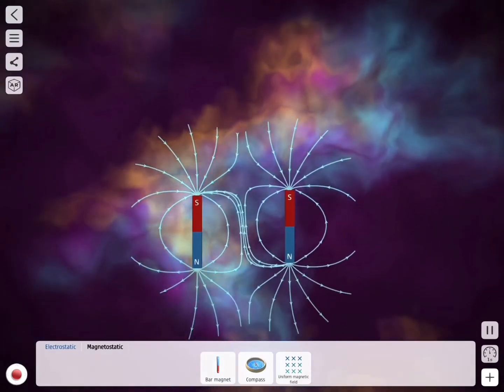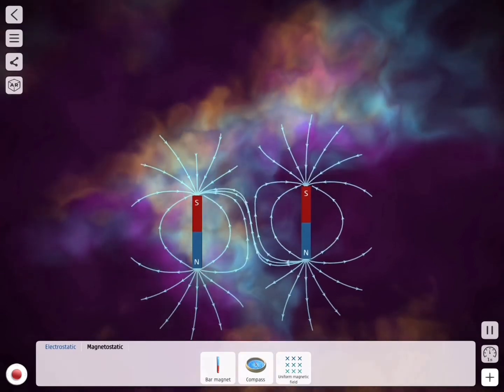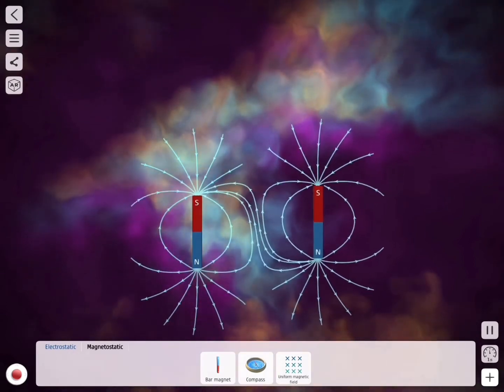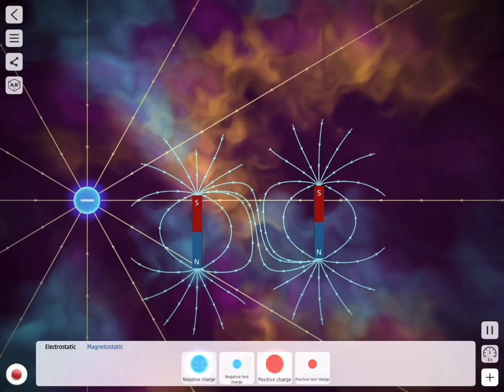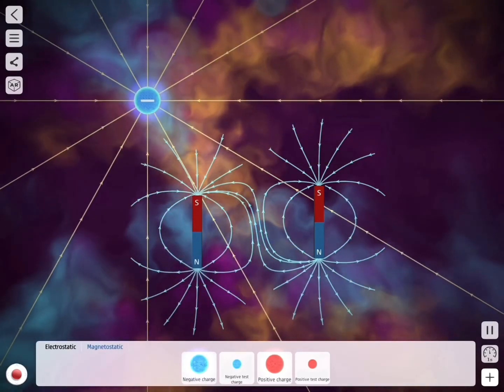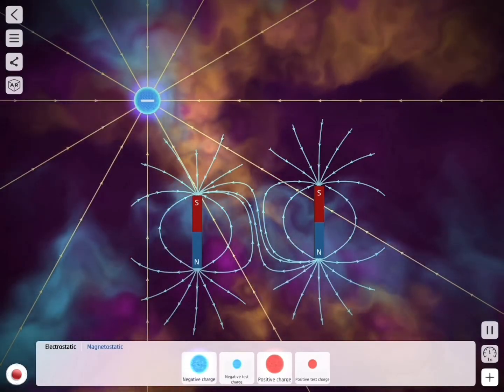You select whichever magnet you like. You can select them and show them what happens with the same poles and opposite poles. Same repels, opposite attracts.